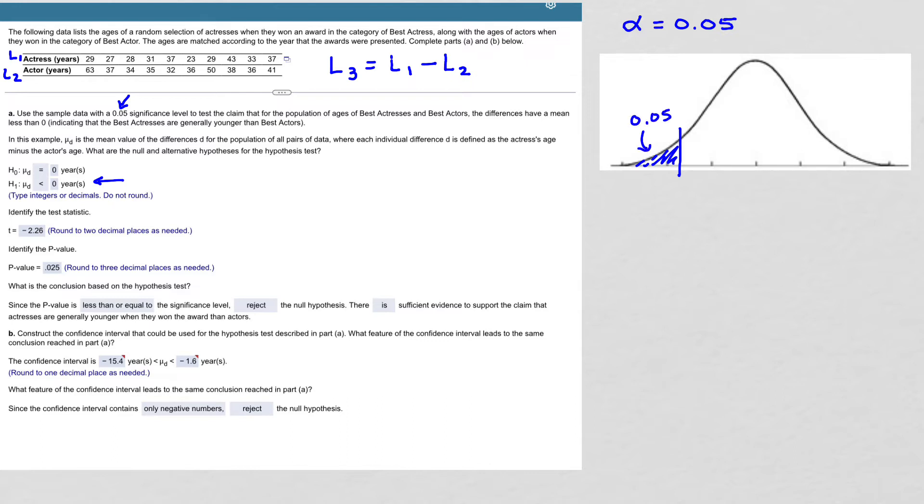But when we work with a confidence interval, we always have to have two tails. So if we are working with a one-tail test and we want to turn this into a confidence interval, then I'm going to make a matching 0.05 in the opposite tail, in this case on the right-hand side.